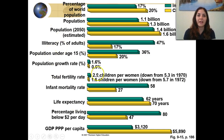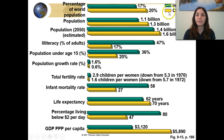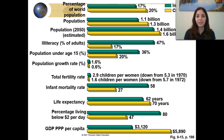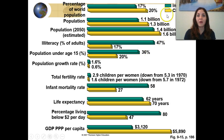Looking at the percent of the world population taken in 2006, India is shown in blue and China in yellow. India contributes 17% of the entire world population in 2006, while China contributed 20%. In 2006, India had a population of 1.1 billion, while China had a population of 1.3 billion.